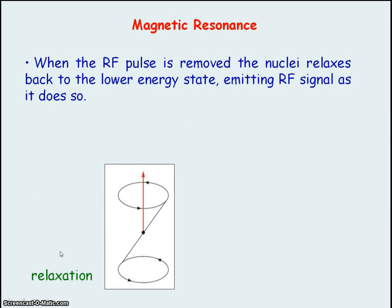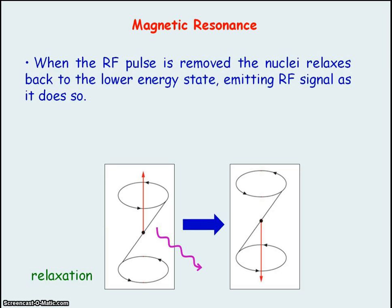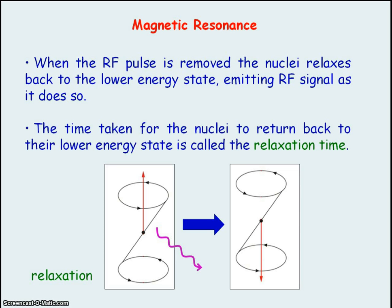When the radio frequency pulse is removed, the nuclei immediately relax or return back to the lower energy state, and in doing so they emit a radio frequency signal which can be detected. This radio frequency signal will have the same frequency as the initial RF pulse that was applied to excite the nuclei. The time taken for the nuclei to return to their lower energy state is called the relaxation time, and this is the duration of the RF signal that is emitted.